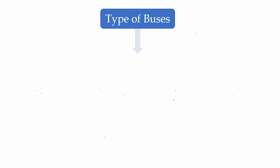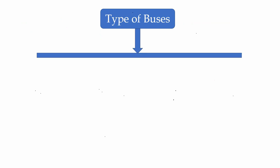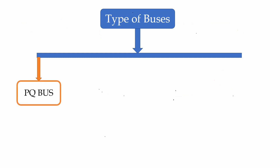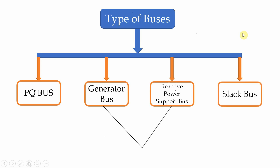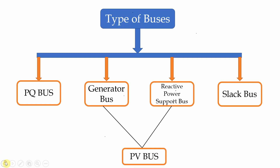In power system there are basically three types of buses. First is PQ buses, also called load buses, in which P and Q values are mentioned. Second is PV buses, which are generator buses or reactive power support buses, in which P and V values are mentioned. Third is the slack bus, which is basically a reference bus — one bus is taken as reference in which V and delta values are mentioned.